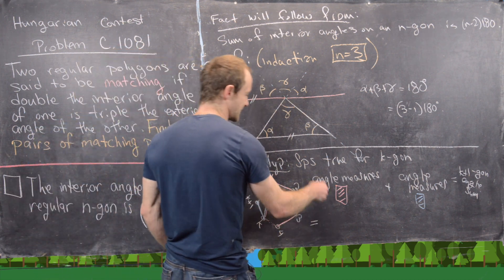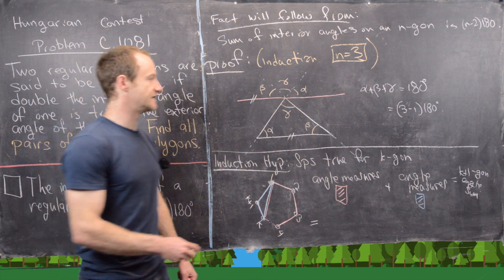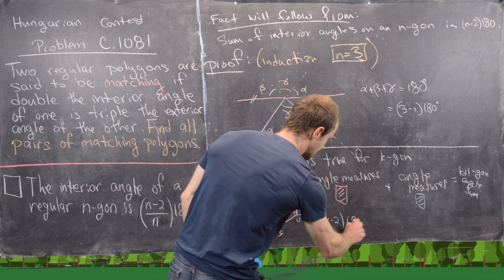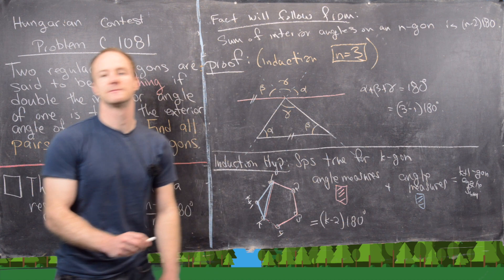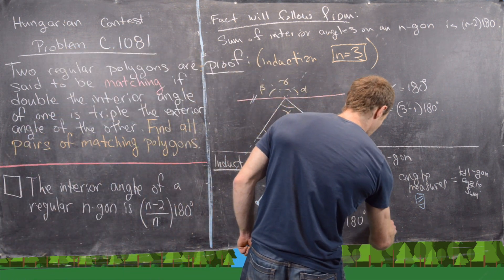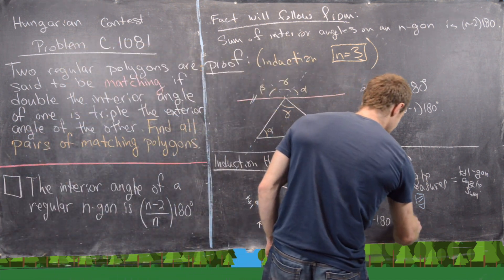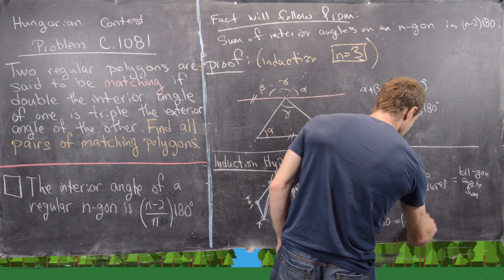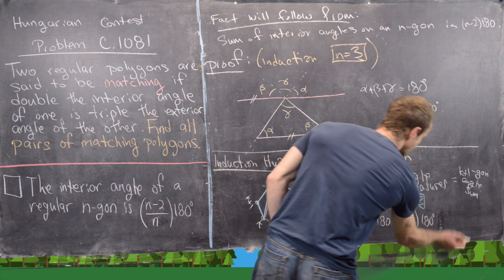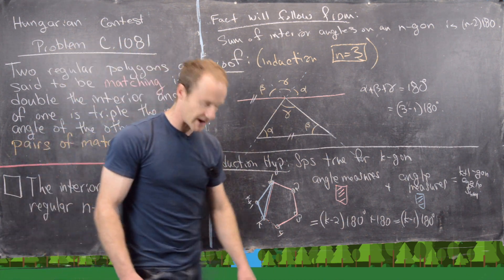But by our induction hypothesis, the angle measures of the stuff that is in pink is given by (k-2) times 180. And then the angle measure of the stuff given by blue is just 180 because it's a triangle, and that's our base case. So notice that this adds up to (k-1) times 180, which is obviously what we need it to be for a k+1-gon to follow this formula.